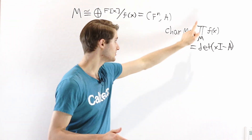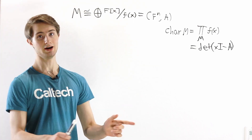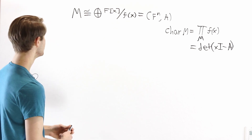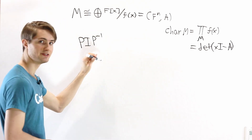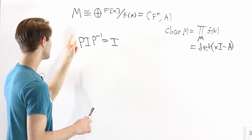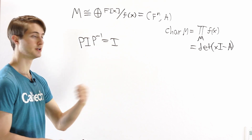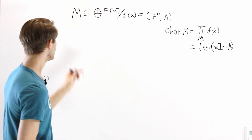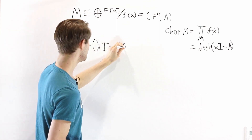So we know this equation holds when A is in rational canonical form. But most matrices are not in rational canonical form, so we need to prove some identities about similarity. Notice that for any matrix P, P·I·P^{-1} = I, and P·(λI)·P^{-1} = λI, because we can always pull out scalars. Now let's look at det(λI - PAP^{-1}).